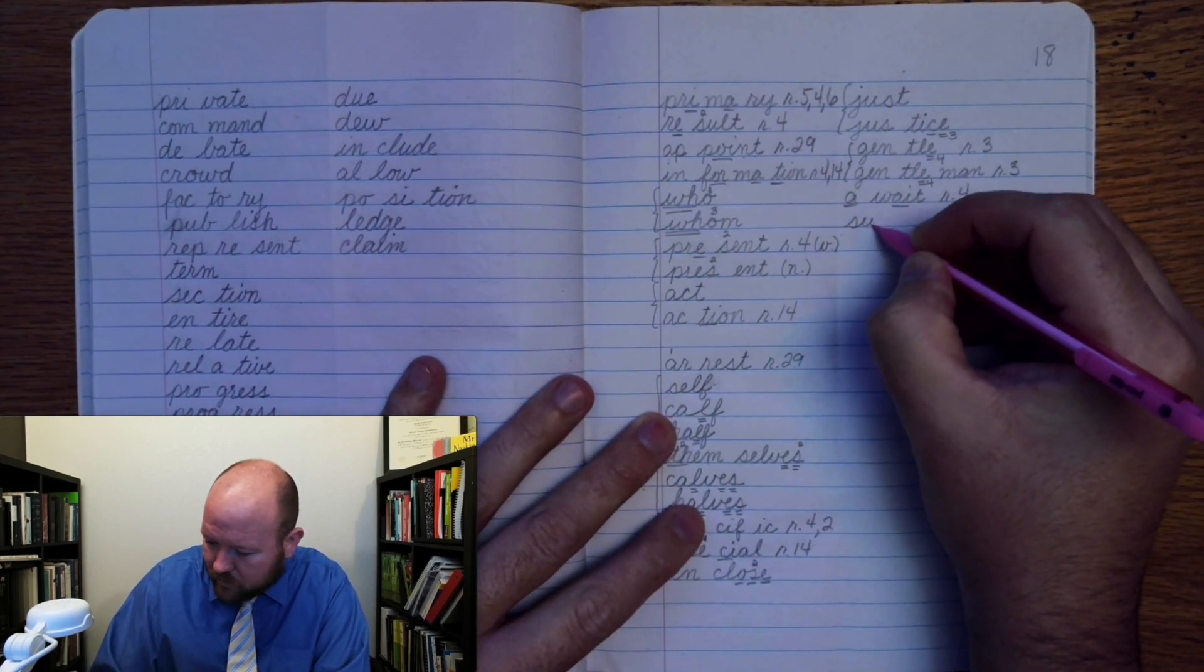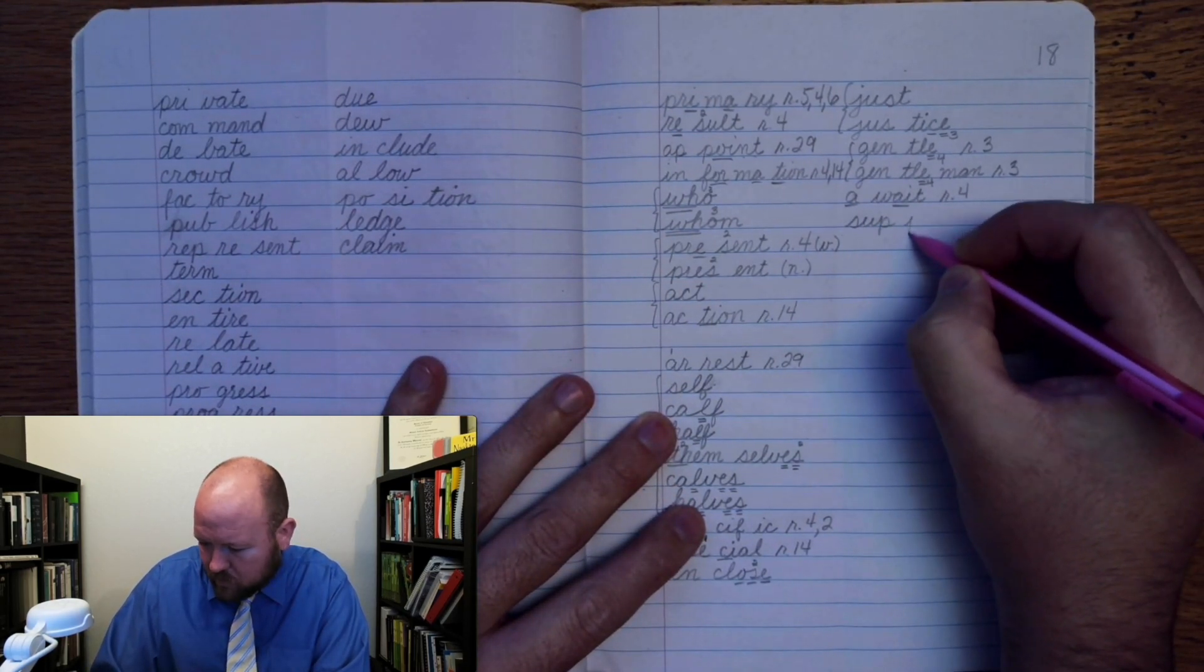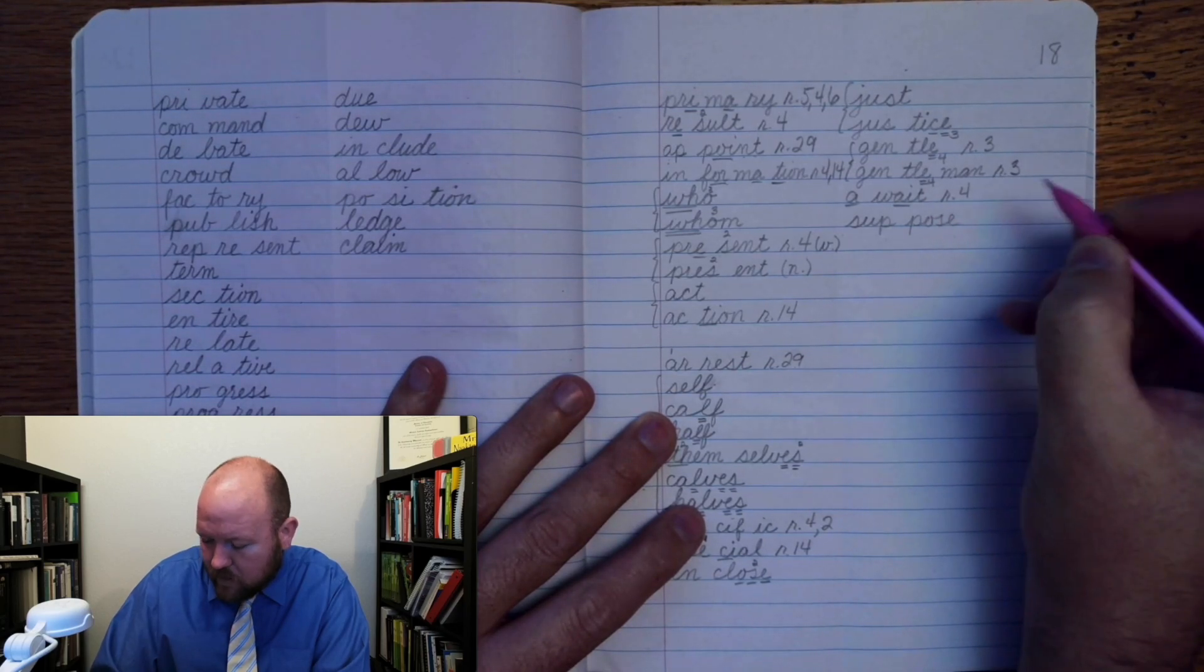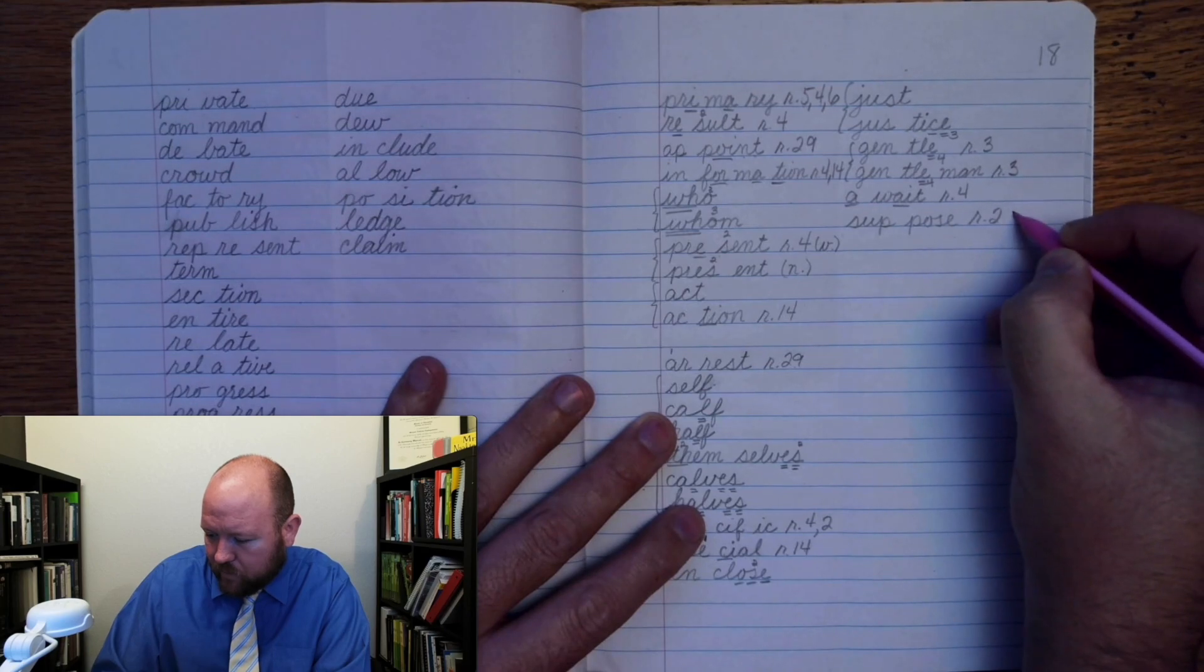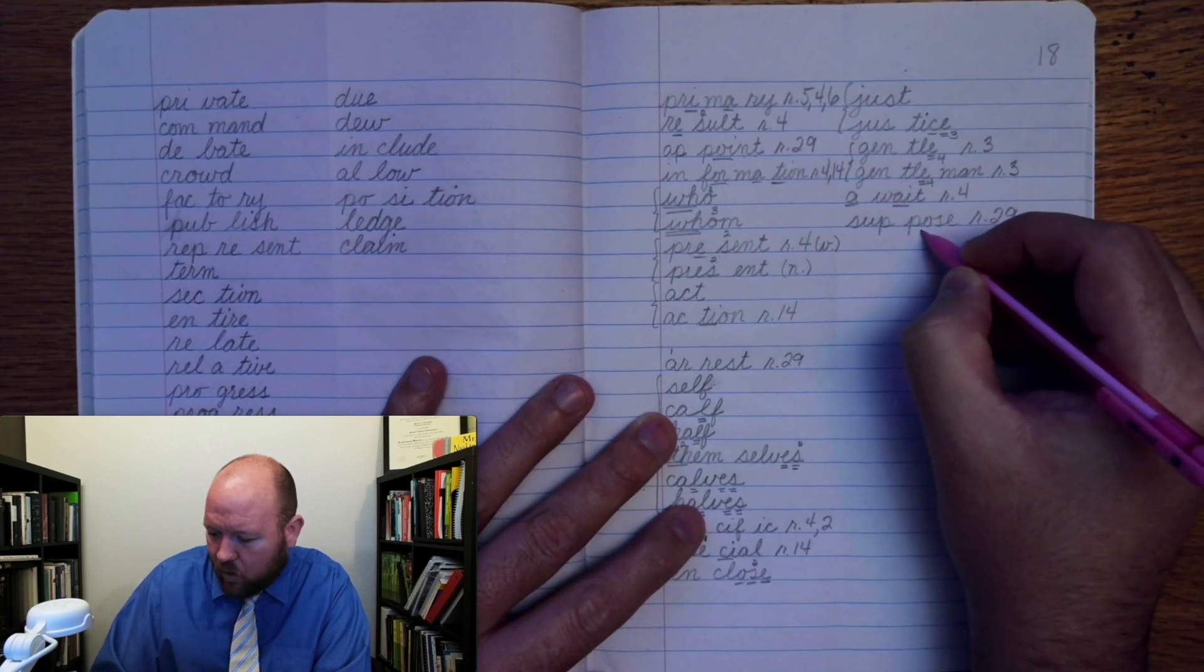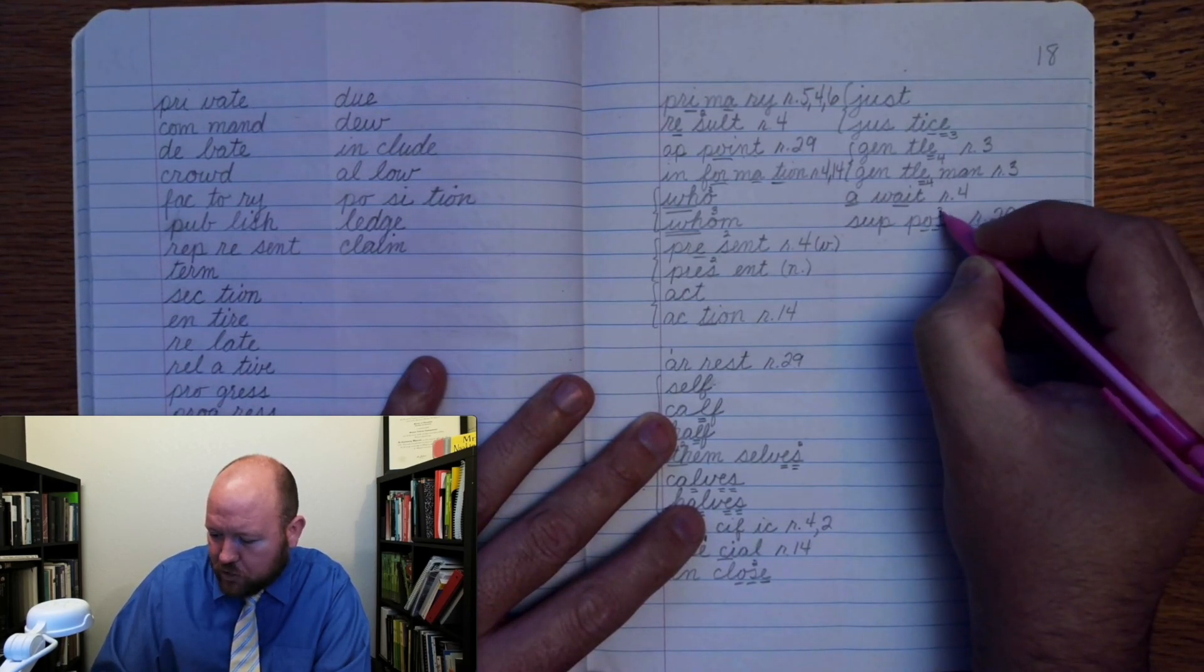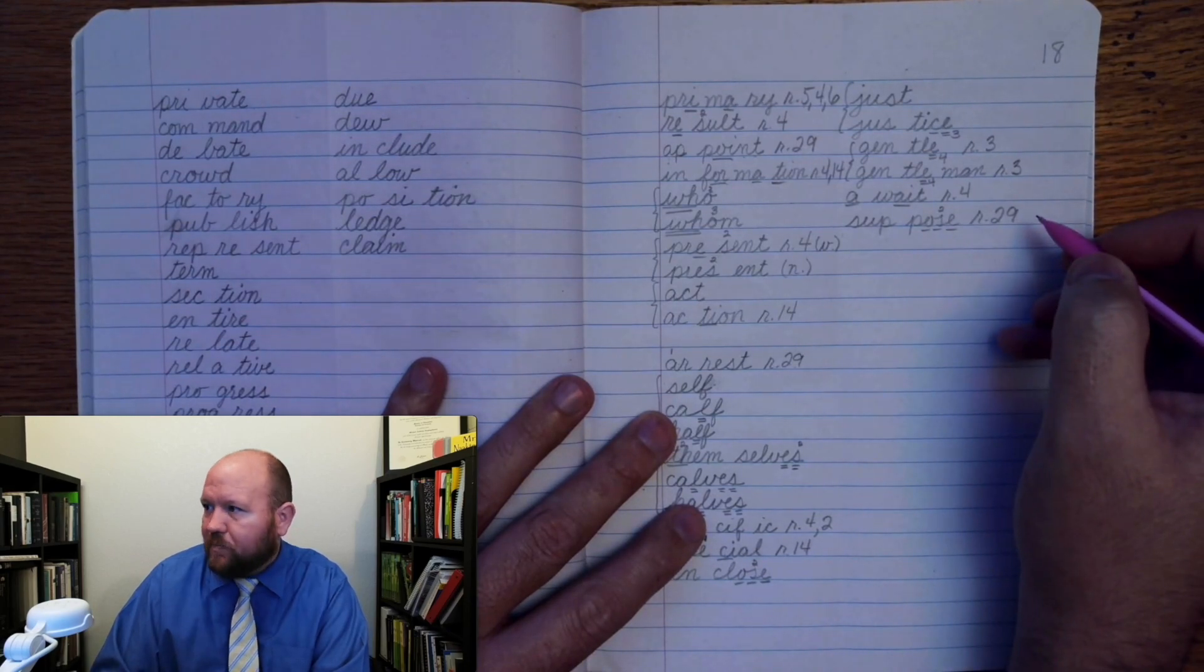Sup-pose. Markings: S-U-P, rule twenty-nine. P-O once, Z once, to. E once. Suppose.